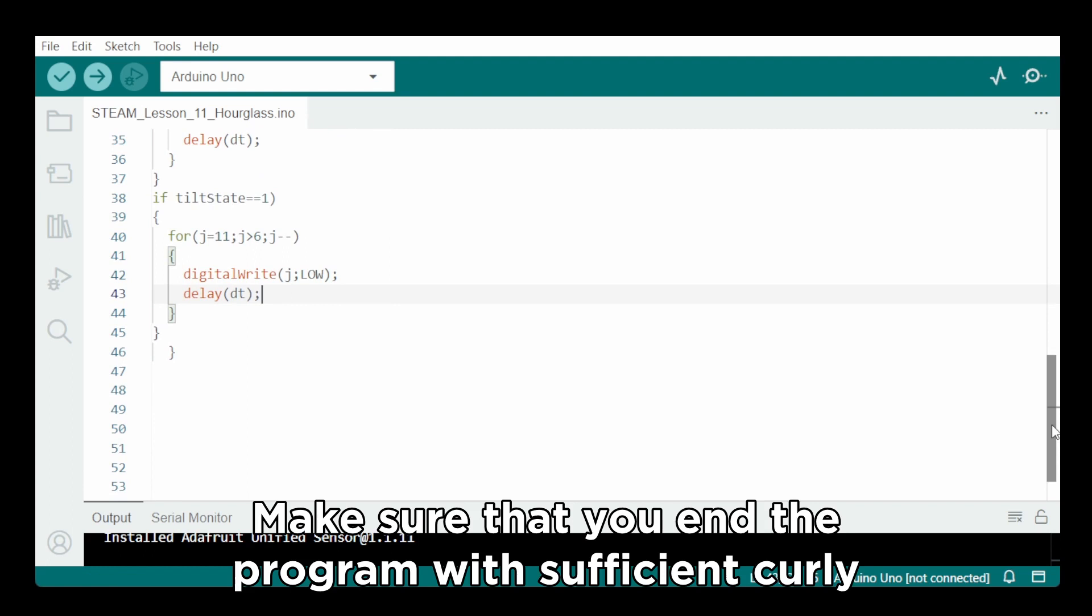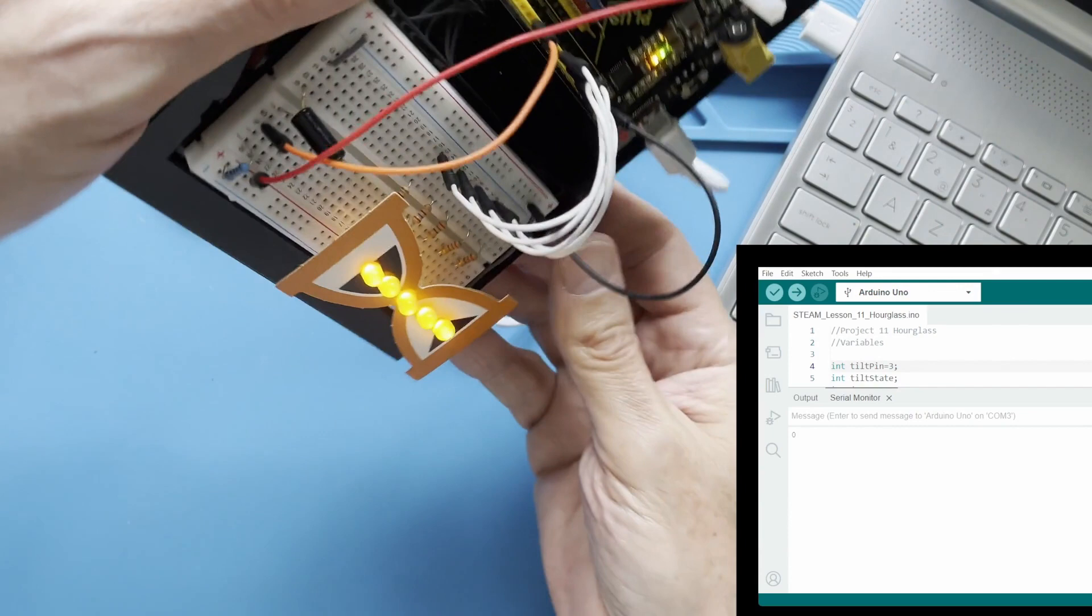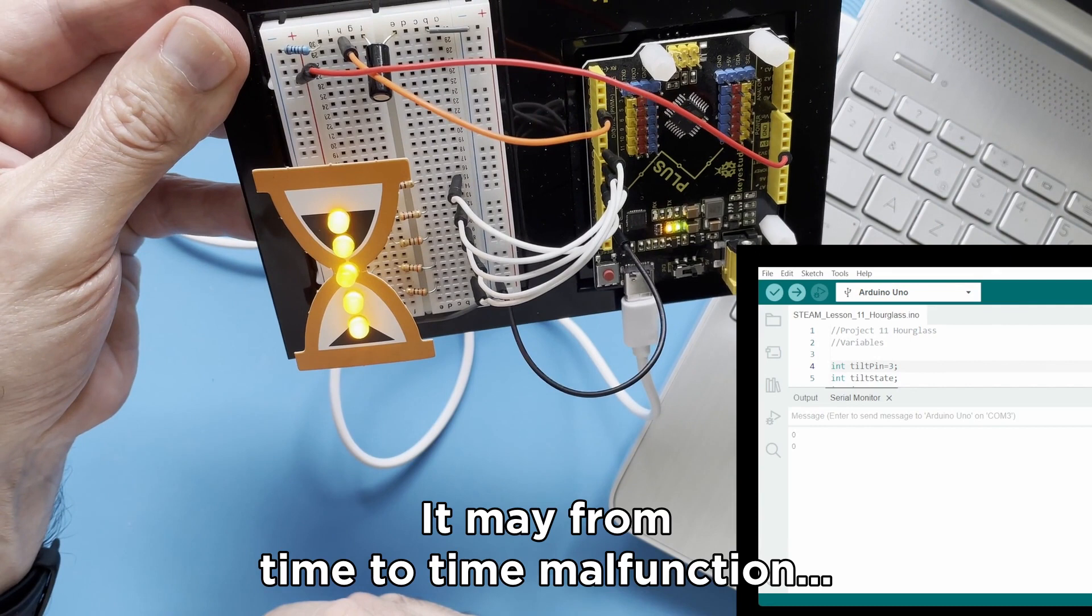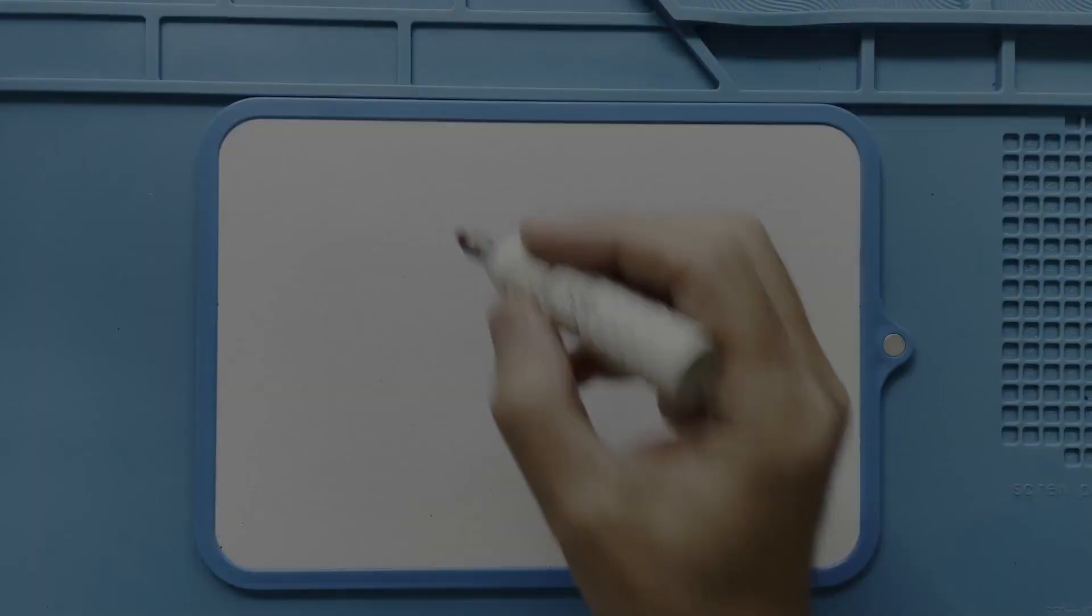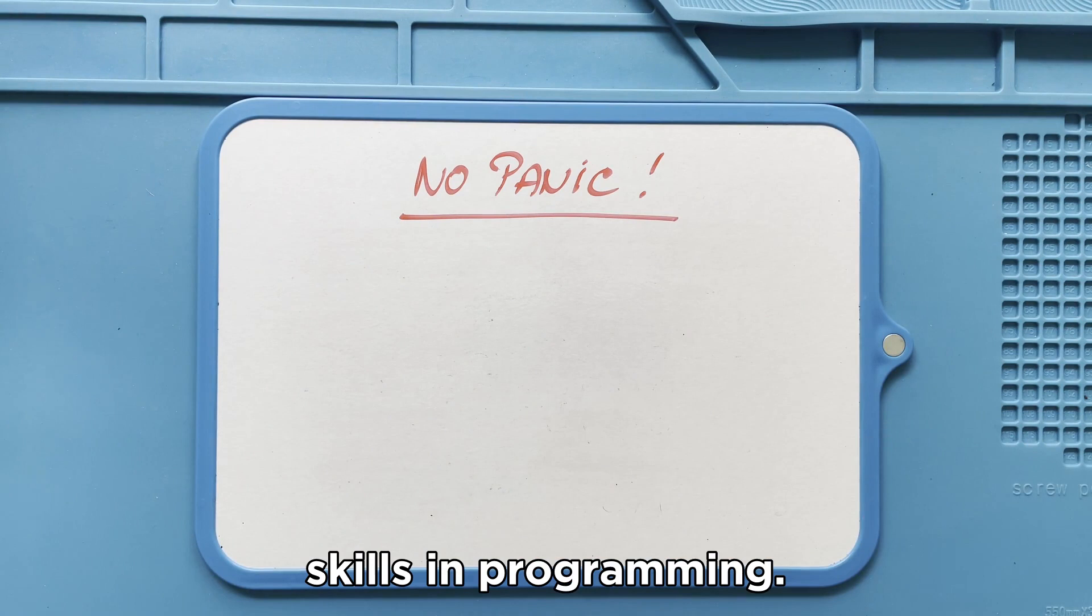Your class is now ready to upload the program and start tilting their breadboards. The hourglasses should go up and down. Now, be aware that the tilt switch is not the most accurate switch. It may from time to time malfunction. If it doesn't work with some of the groups, tell them not to panic. Tracking and correcting errors is one of the most important skills in programming.